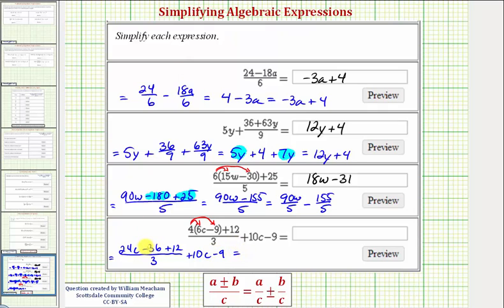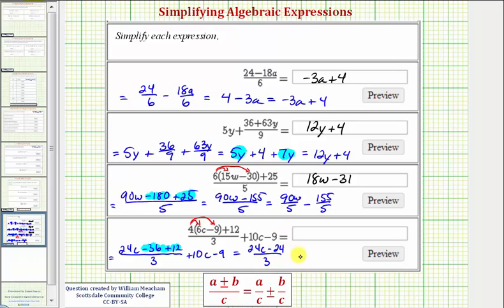We can combine the like terms here. Negative 36 plus 12 is negative 24. So we have 24c minus 24 divided by 3. And then we still have plus 10c minus 9. We're running short on room, so let's finish this on the next slide.